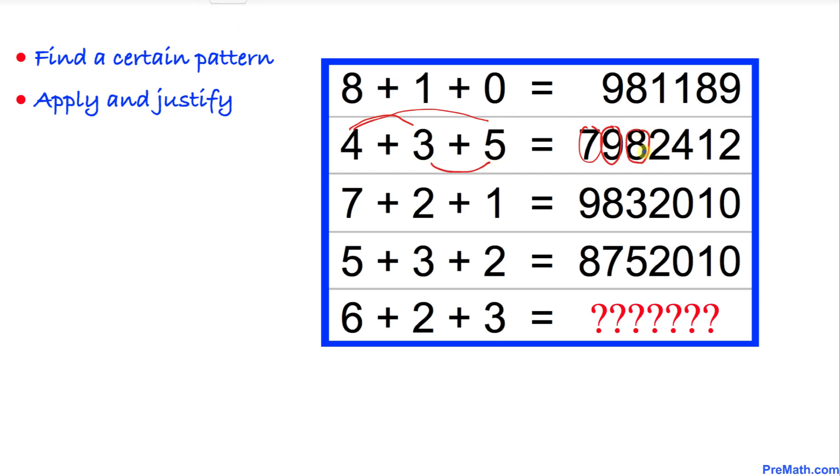And now if we add these three numbers—seven plus nine plus eight—we indeed get 24. And the last two digits, 12, if we add these three left-hand side numbers, we are going to get 12.